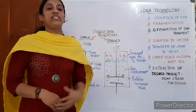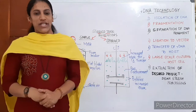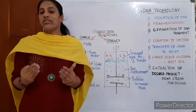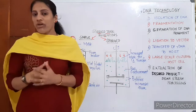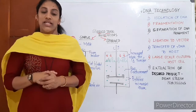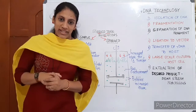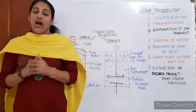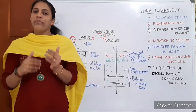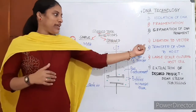Then transfer of the R-DNA to the host cell. We have already discussed how a host cell is made competent to receive the R-DNA. Still, once again, listen to the point: how is a host cell made competent to receive R-DNA?